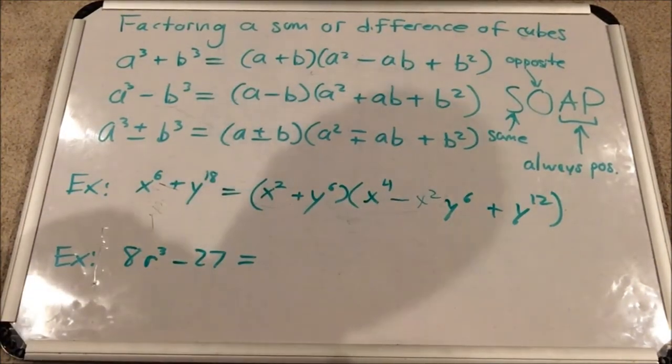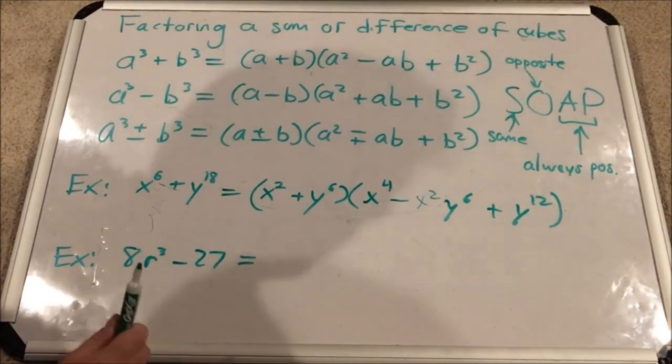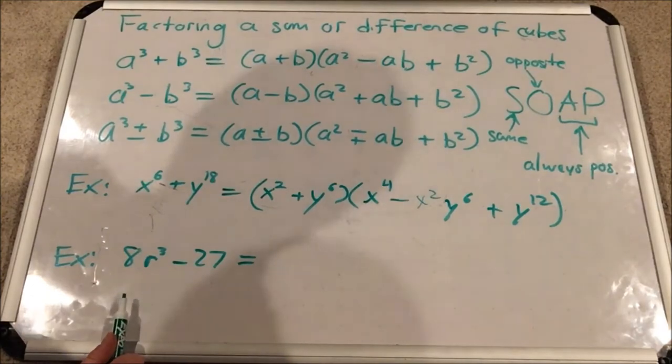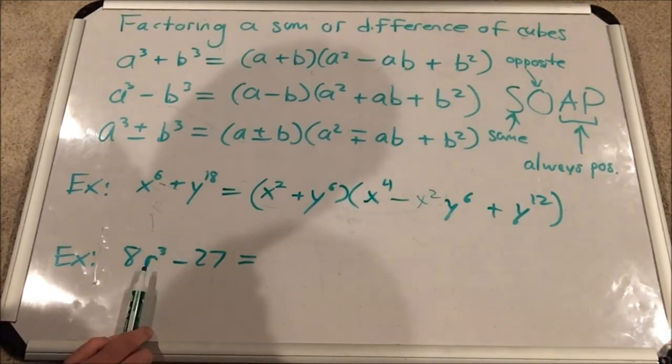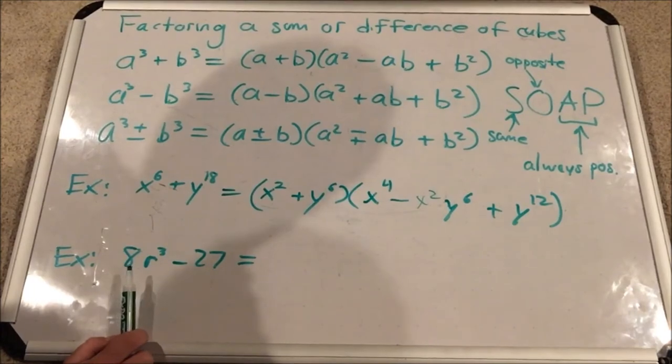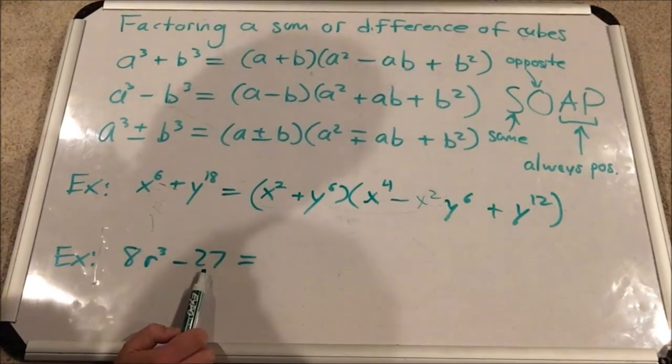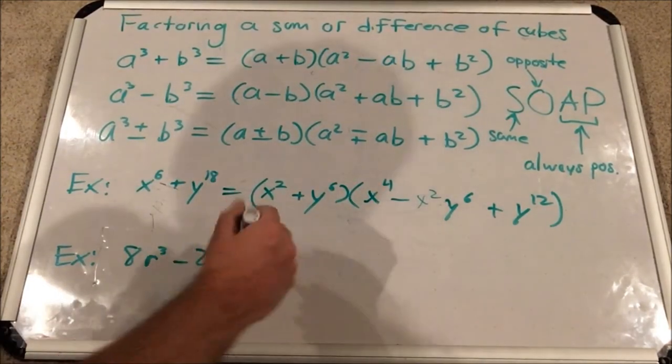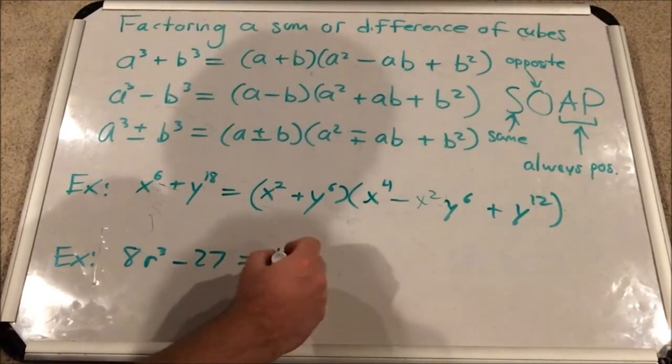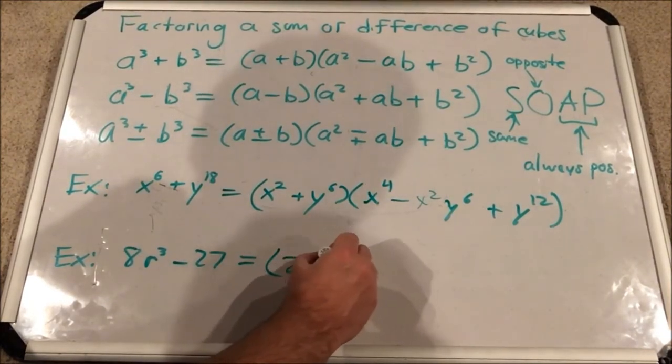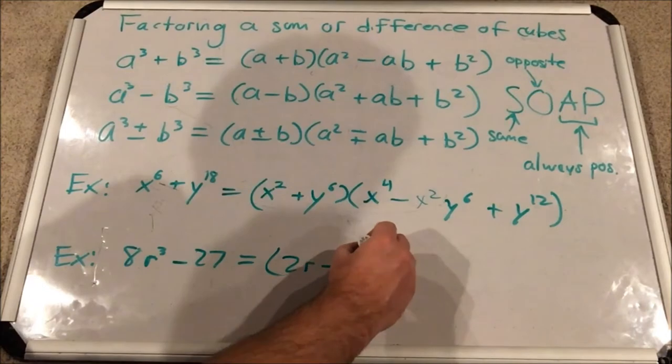8r cubed minus 27. Can I take the cube root of both terms? Absolutely. The cube root of 8r cubed is equal to 2r. And the cube root of 27 is equal to 3. So this would be 2r minus 3.